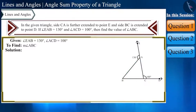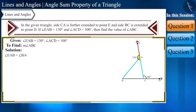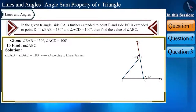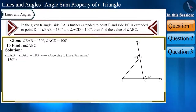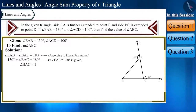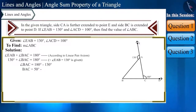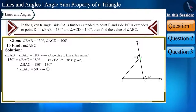First, angle EAB plus angle BAC equals 180 degrees because it is a linear pair. Putting in the value of angle EAB: 130 degrees plus angle BAC equals 180 degrees. Thus angle BAC equals 180 minus 130, which is 50 degrees. Let's name this equation 1.